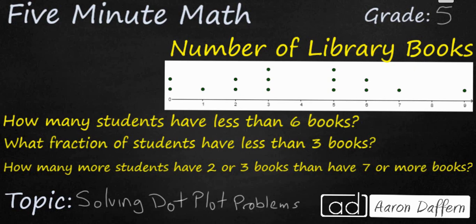Our first question asks how many students have less than six books. So our key here is less than. And we're looking at six books. And counting then we have one, two, three, four, five, six, seven, eight, nine, 10, 11 students that have less than six books.